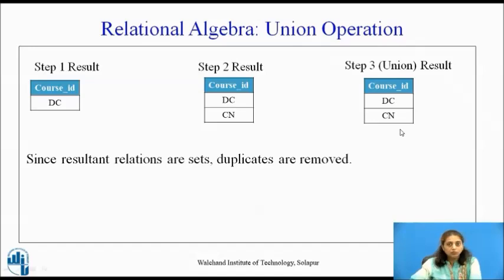Duplicates are removed because the resultant relations are considered to be sets.